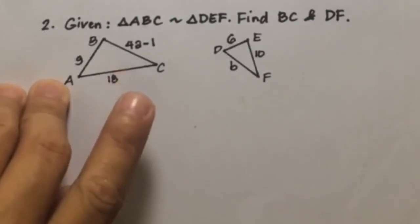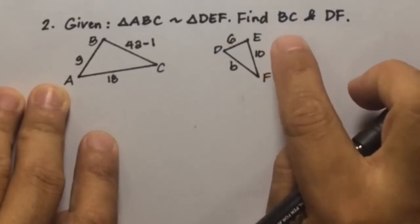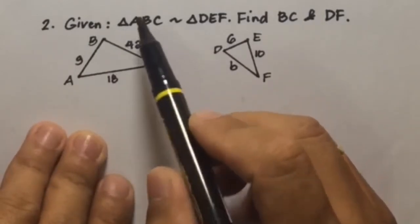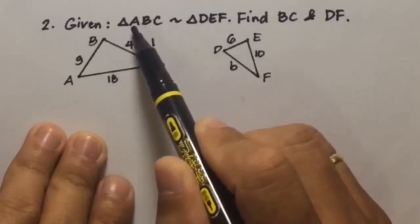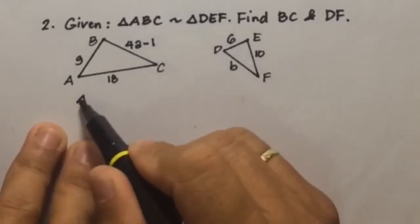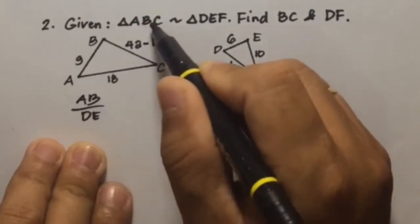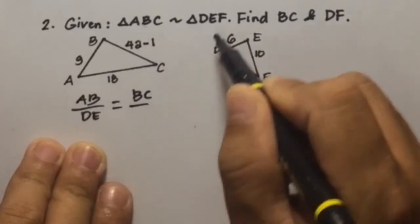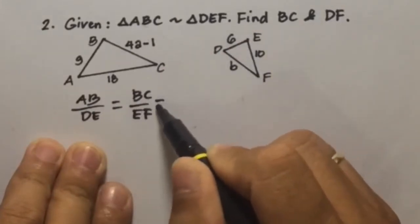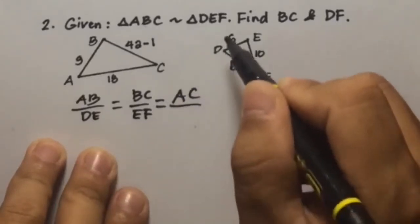Number 2. Given that triangle ABC is similar to triangle DEF, find BC and DF. So based on the given, triangle ABC is similar to triangle DEF. So we can say that AB corresponds to DE, then BC corresponds to EF, and AC corresponds to DF.